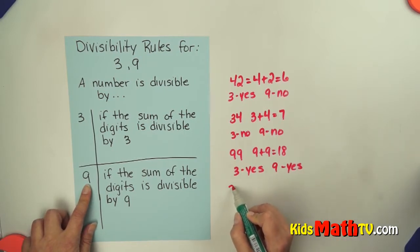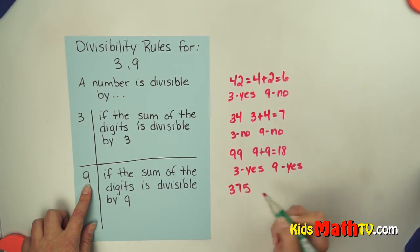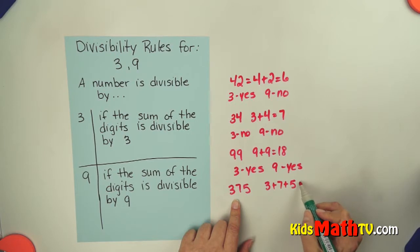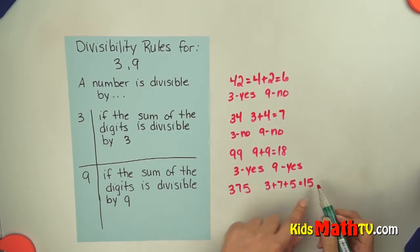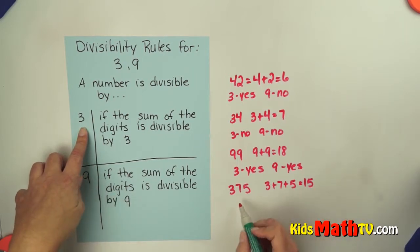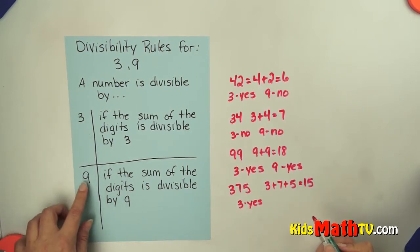How about one more example? We'll do a larger number, 375. If I add these digits, 3 plus 7 plus 5, 3 plus 7 is 10, 10 plus 5 is 15. I check, does 15 divide by 3 evenly? Yes, 15 divided by 3 is 5. So it is divisible by 3.